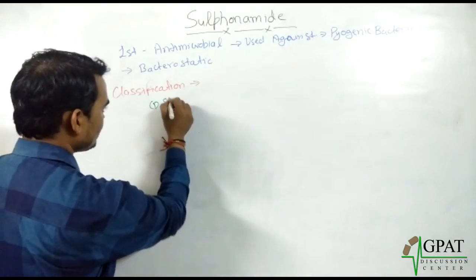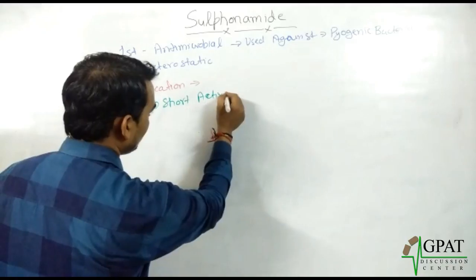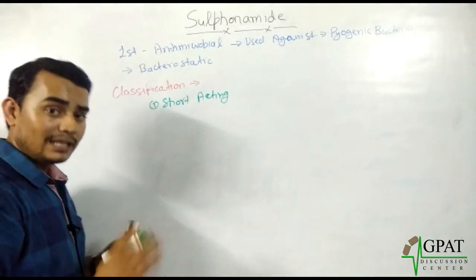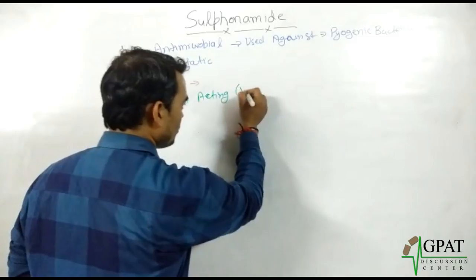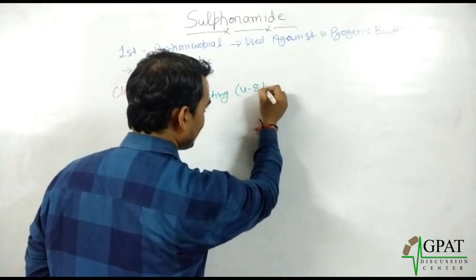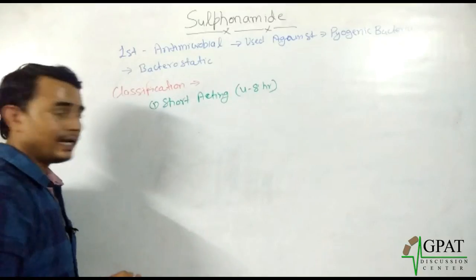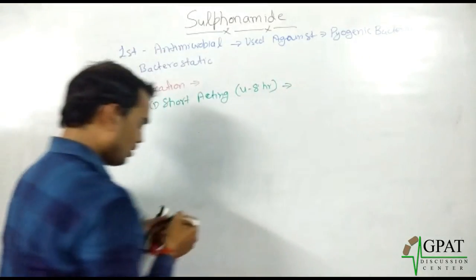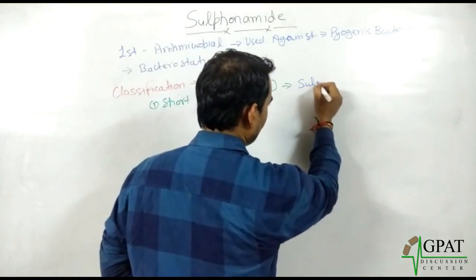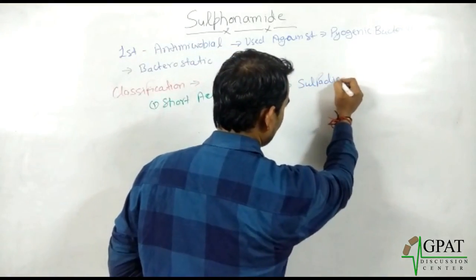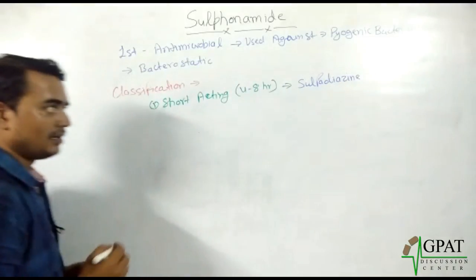The first class is known as short-acting. Short-acting means these have a half-life of 4 to 8 hours. The drug name in this class is sulfadiazine.